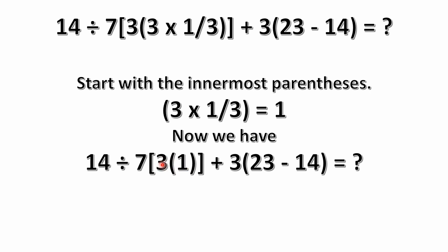So whenever you see a number next to parentheses like this, this would represent implicit multiplication, which we don't have the multiplication symbol here, but it doesn't really matter. So this is basically 7 times 3, this whole thing. Then we have our plus and then the 3 times 23 minus 14 in parentheses.